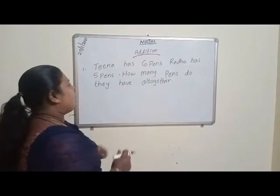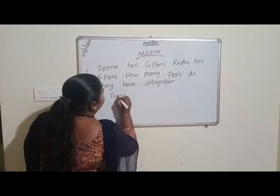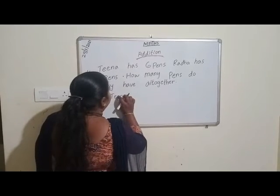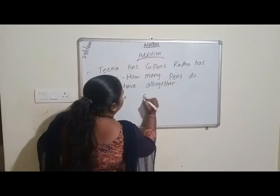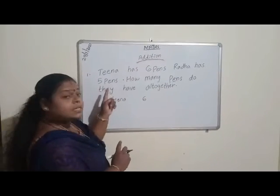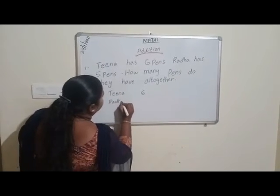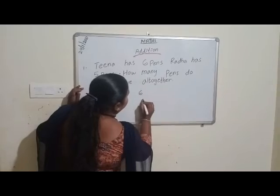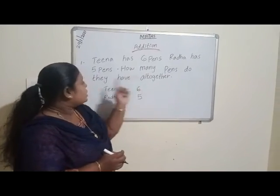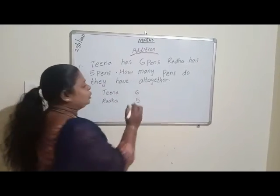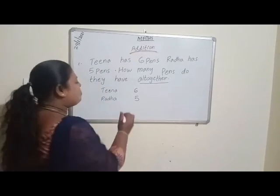Tina has 6 pens. Tjada has 5 pens. How many pens do they have all together? All together means we have to add. So, plus.